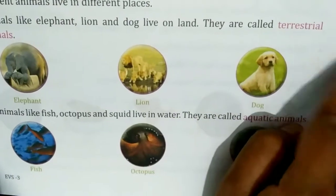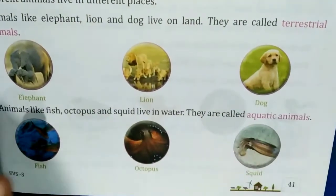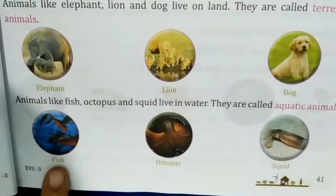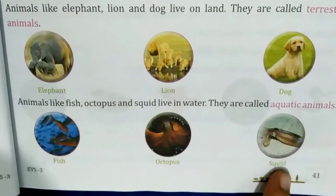Animals which live on the land, what are they called? Terrestrial animals. And animals like fish, octopus and squid that live in water, what are they called? Aquatic animals.